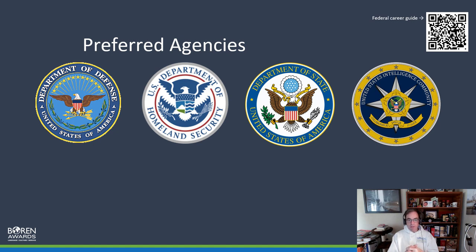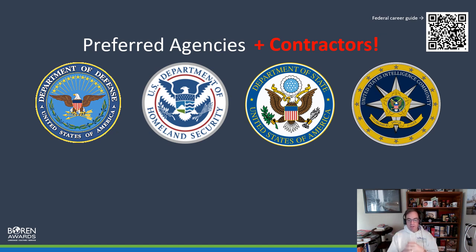You're talking to a Boren selection panel, and they are going to be interested in how you are connecting Boren's priorities with your career goals. The preferred agencies are going to be important here: the Department of Defense, Department of Homeland Security, Department of State, and the intelligence community. When you are looking for work in the federal government, contracting with one of these agencies counts — I am technically a government contractor with the Department of Defense, so what I do would count toward a service agreement.